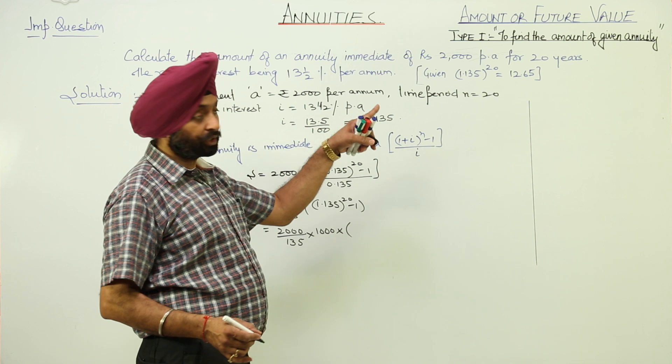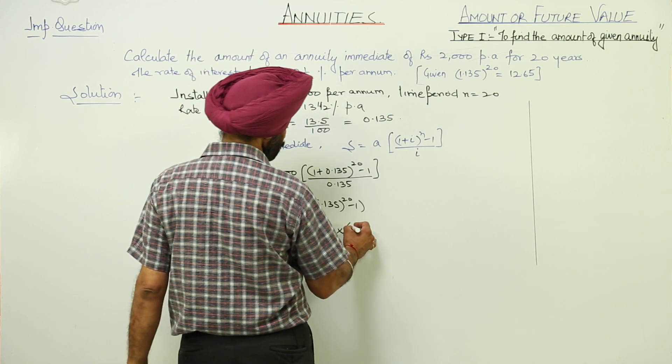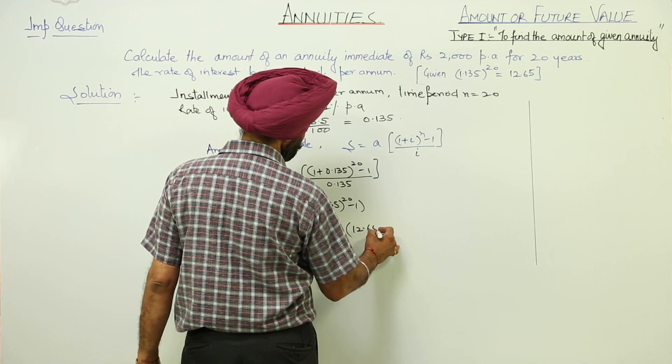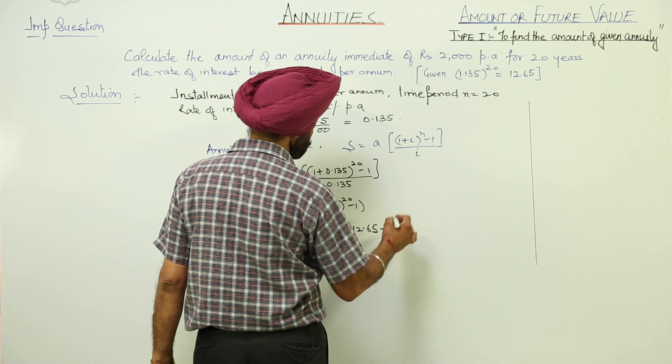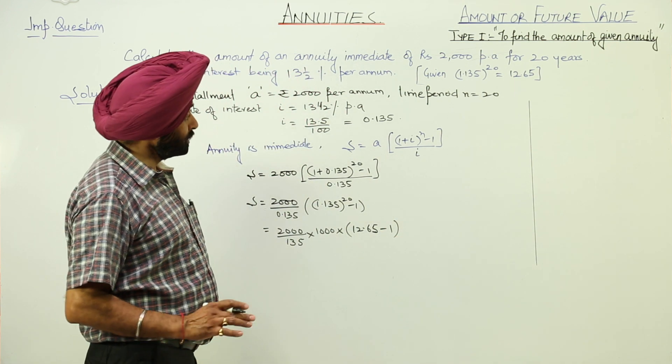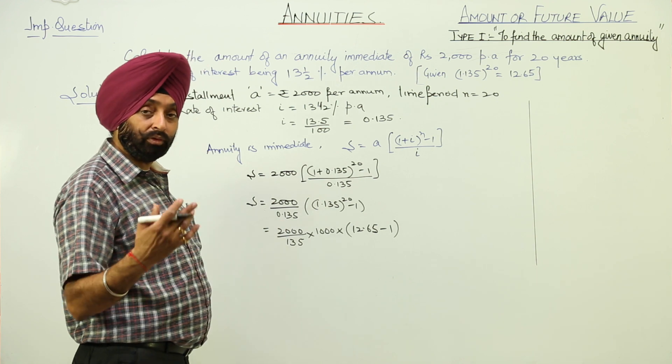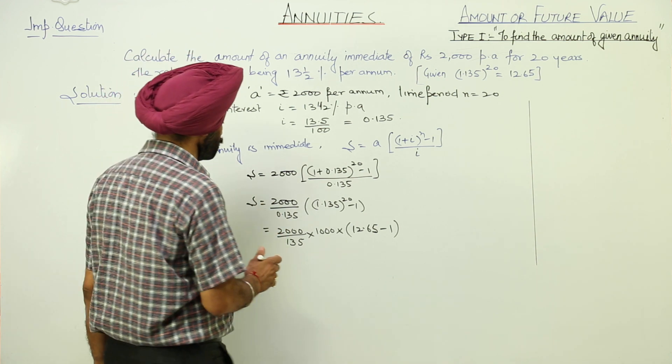For this part it is already given that it is 12.65 minus 1. If it is not given, then we have to calculate by log. I am just going to show that also.